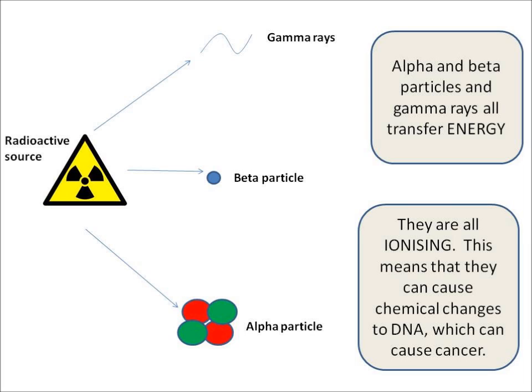Alpha and beta particles and gamma rays all transfer energy. They all carry energy and they are all ionizing. This means that they can cause chemical changes to DNA, which in turn can lead to cancer.